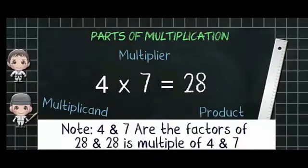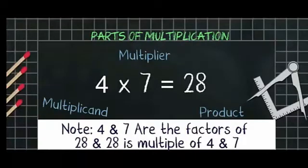Here we can say that 4 and 7 are the factors of 28 and also 28 is multiple of 4 and 7.